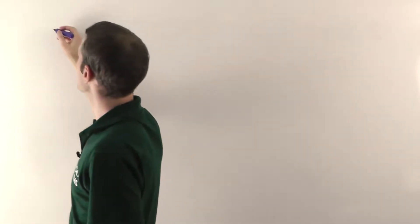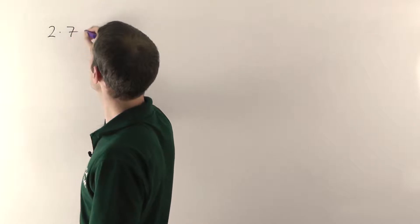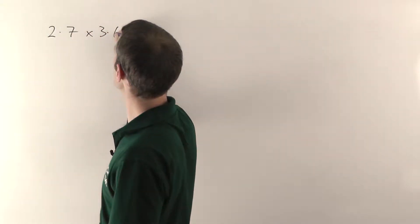So if you take two decimal numbers, let's have 2.7 and we're going to multiply it by 3.6.